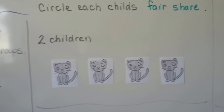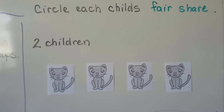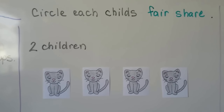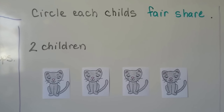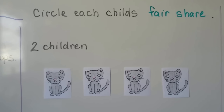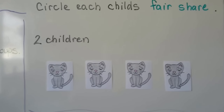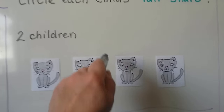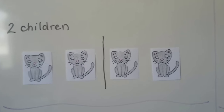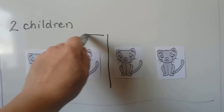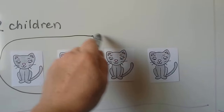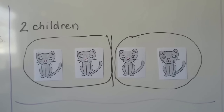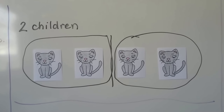Circle each child's fair share. There are four toy cats and there are two children. How can we separate them so each child will get a fair share? We can separate them in half — one child will get two, and another child will get two. They'll each get two cats and a fair share. They have the same amount.